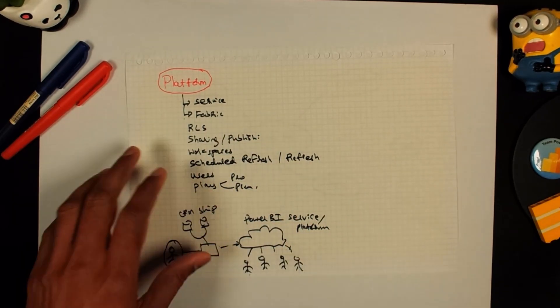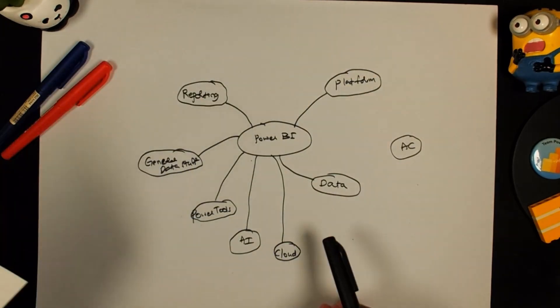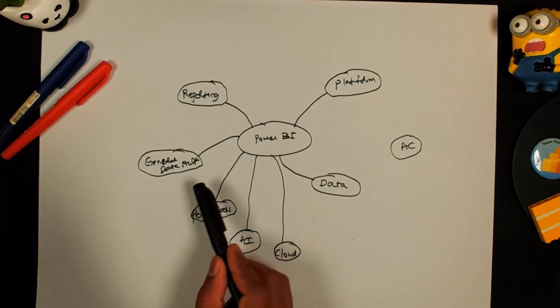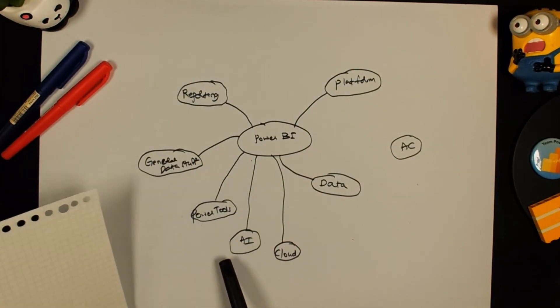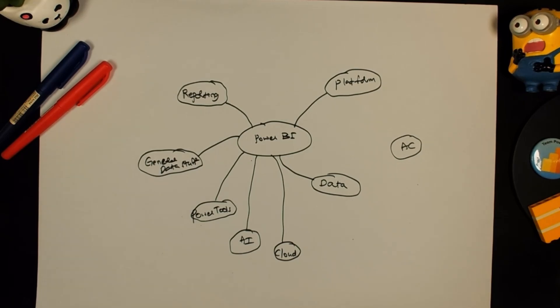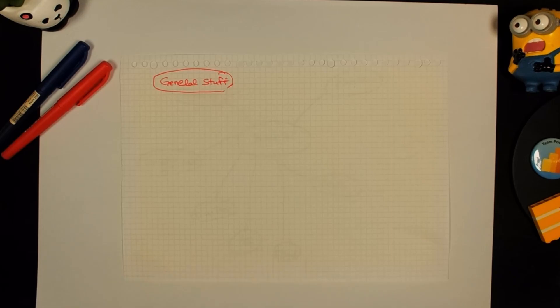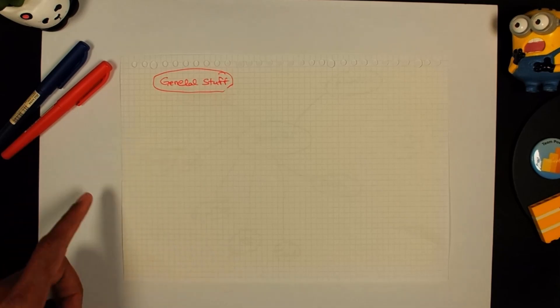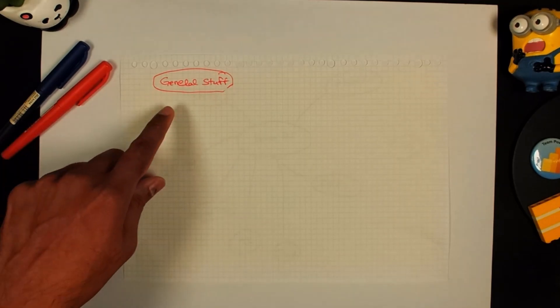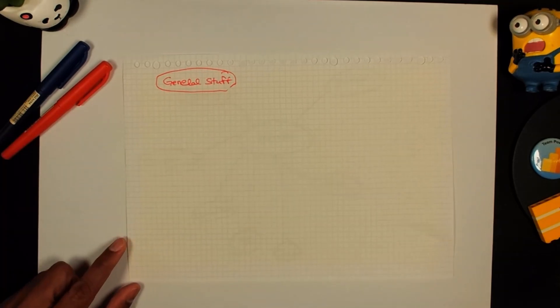And with this, we have covered a majority of the things. So we have covered the data, platform and reporting. Everything else is really simple stuff. I'm going to quickly go through them as well. Let's start our concepts with the general data stuff. Apart from all the data stuff that you have already heard, there are many other data concepts and jargon that you need to know in the inside Power BI. And I've categorized them into this general area.